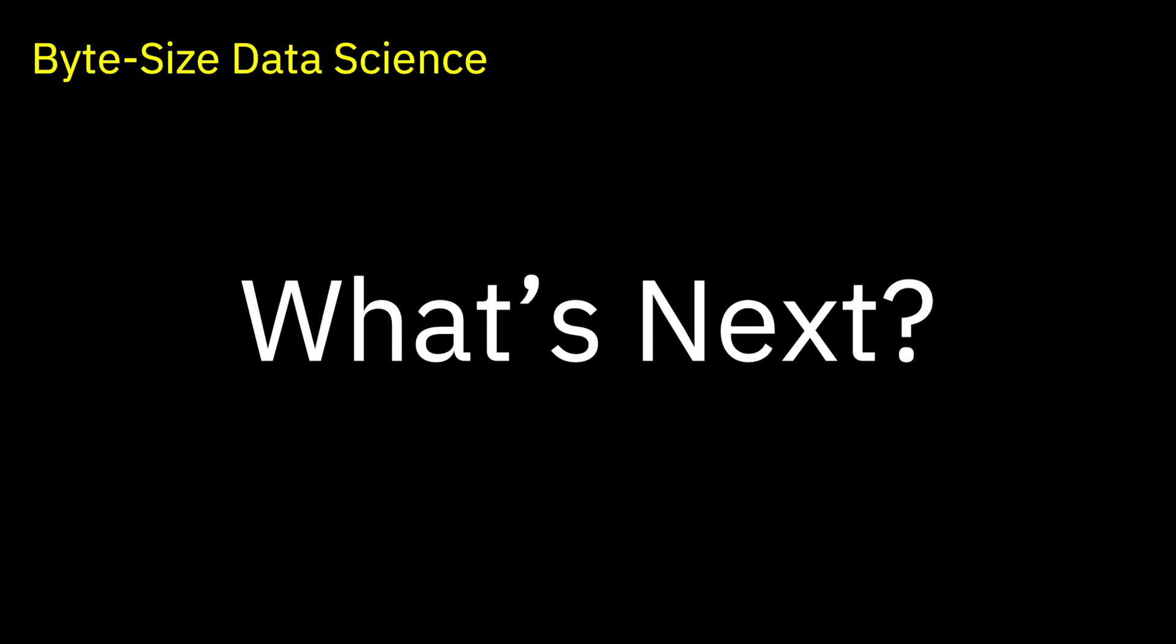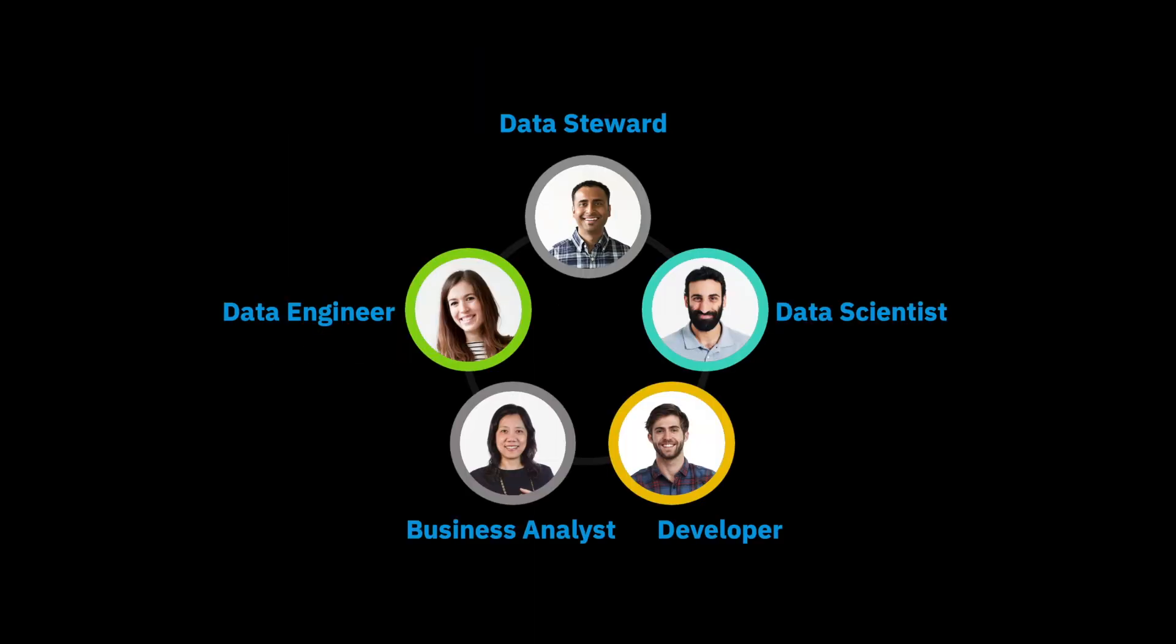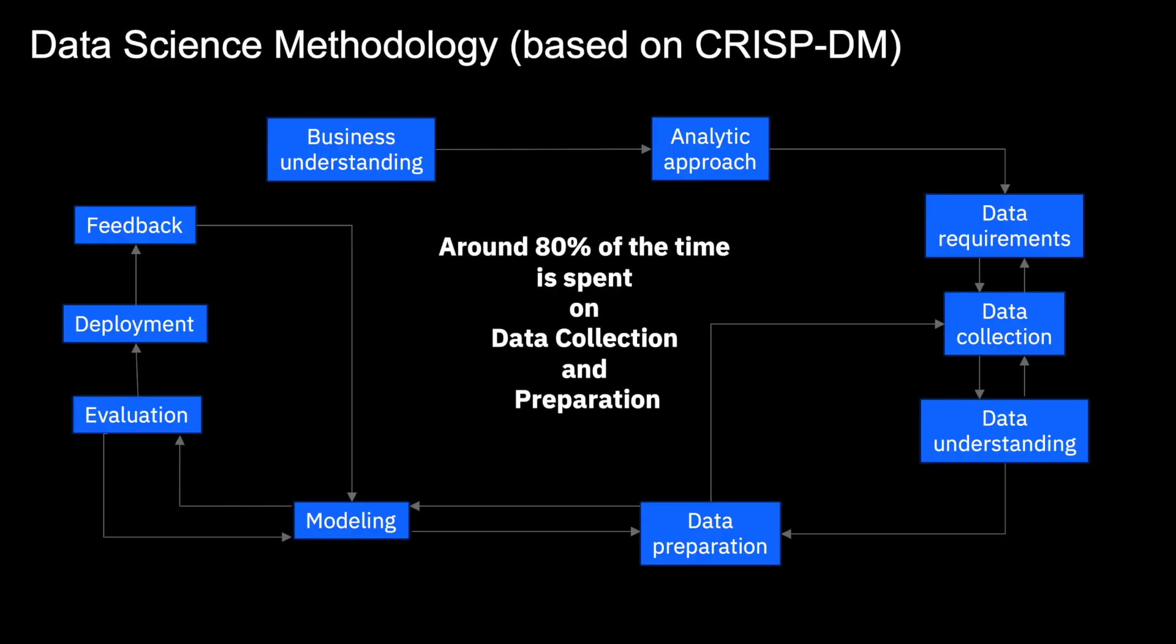We talked about why we should care about data science, machine learning, and deep learning, and the fact that it is a team sport and people that already have skills related to data organization and manipulation, such as SQL, are still relevant. This was also shown through a data science methodology and the fact that roughly 80% of the time is likely spent in areas outside machine learning and deep learning.